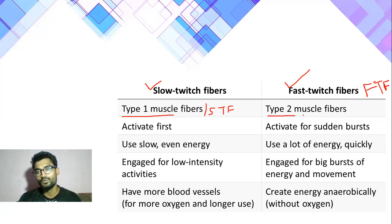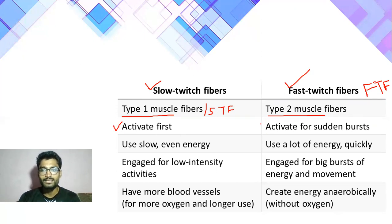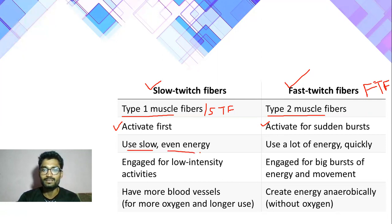Fast twitch को Type 2 muscle fiber बोला जाता है, जो Type 2A और 2B में divide होता है। Type 2 पहले activate होता है, फिर Type 1 धीमे-धीमे long duration activity के लिए energy supply करता है। Type 2 में activation के लिए time नहीं मिलता — यह हमेशा activate form में रहता है। Sudden burst stimulation मिलते ही तुरंत काम करता है। Type 1 slow energy generate करता है लेकिन continuous energy generate करता है।